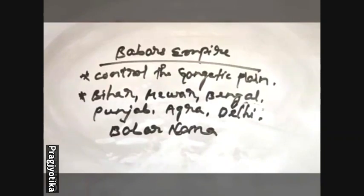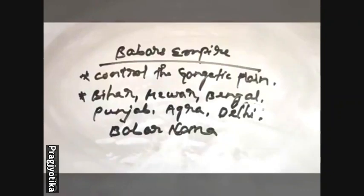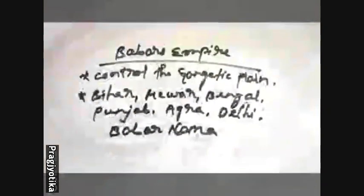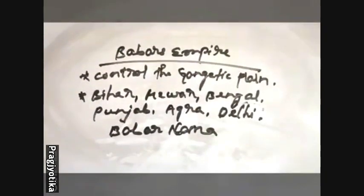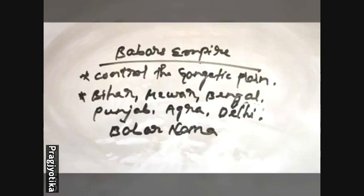Babur died in the year 1530 AD. He did not die in the battlefield; in fact, he was poisoned by his own men. That is how Babur's rule came to an end. And then his son Humayun ascended the throne.